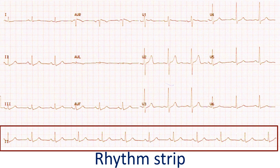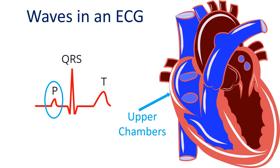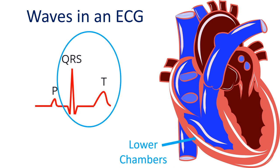The lower part of the image shows a continuous recording from one lead. This is called a rhythm strip, meant for checking abnormalities in heart rhythm. The contraction of the upper chambers of the heart starts soon after the beginning of the P wave, which represents the electrical activity of the upper chambers. QRS complex and T wave are the electrical signals from the lower muscular chambers of the heart. ECG changes in a heart attack are usually manifest in these waves.